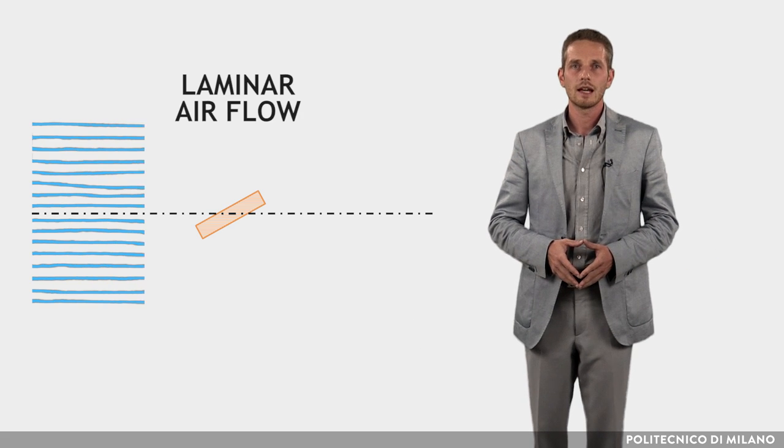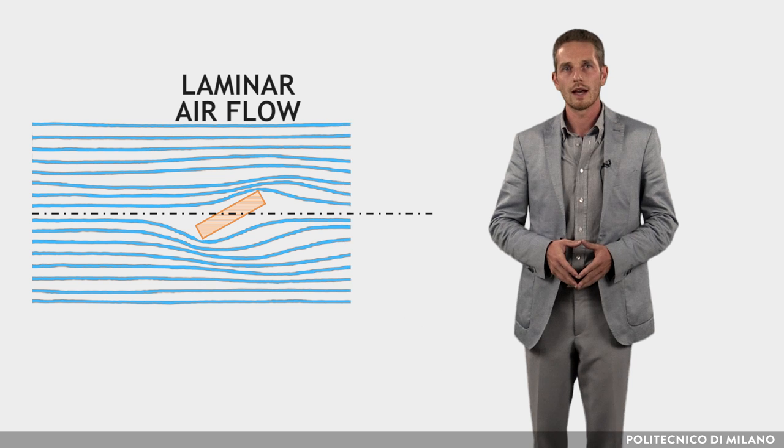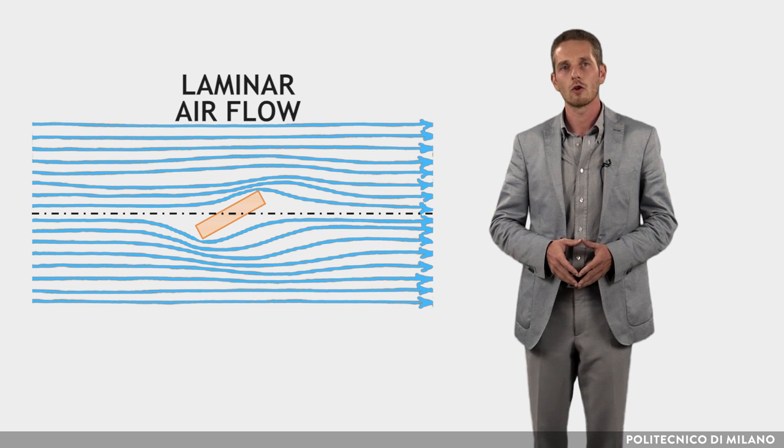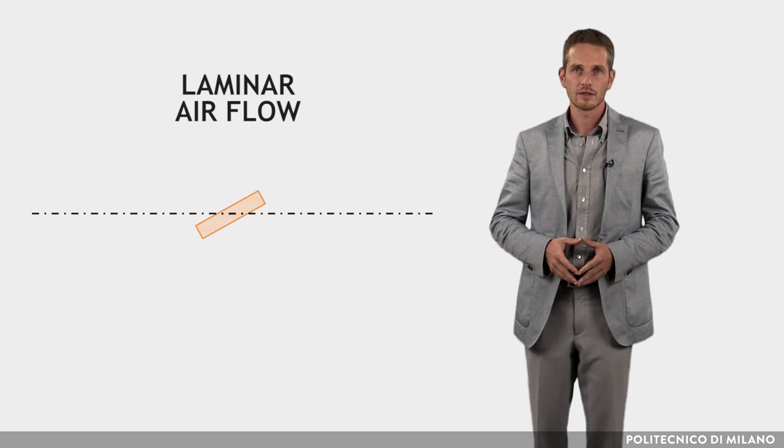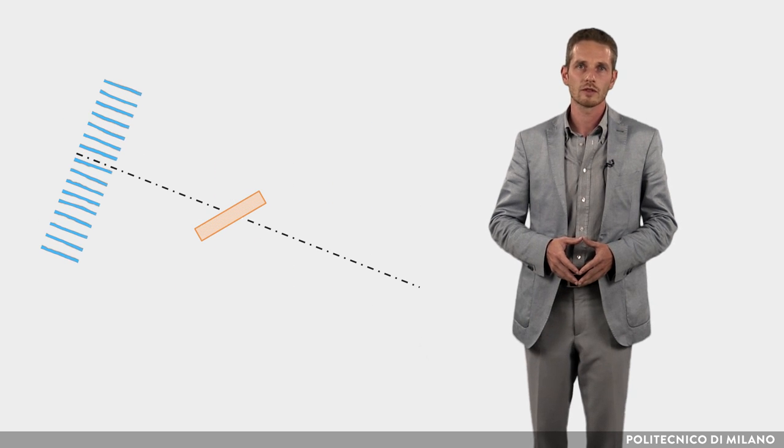An air flow is called laminar when the speed is low and the fluid streamlines all move in parallel. As the speed increases or a pronounced change of direction occurs, the motion becomes turbulent.